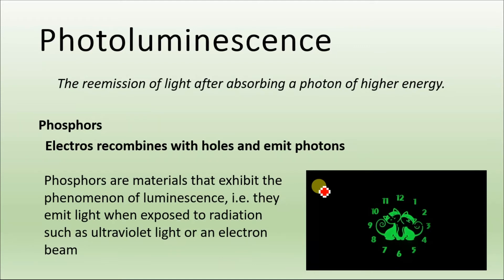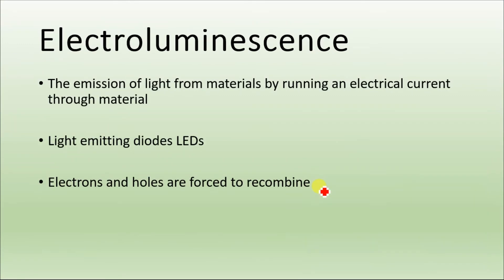The best example of photoluminescence are phosphors. Phosphors are materials that exhibit the phenomenon of luminescence — they emit light when exposed to radiations like ultraviolet radiation or an electron beam.